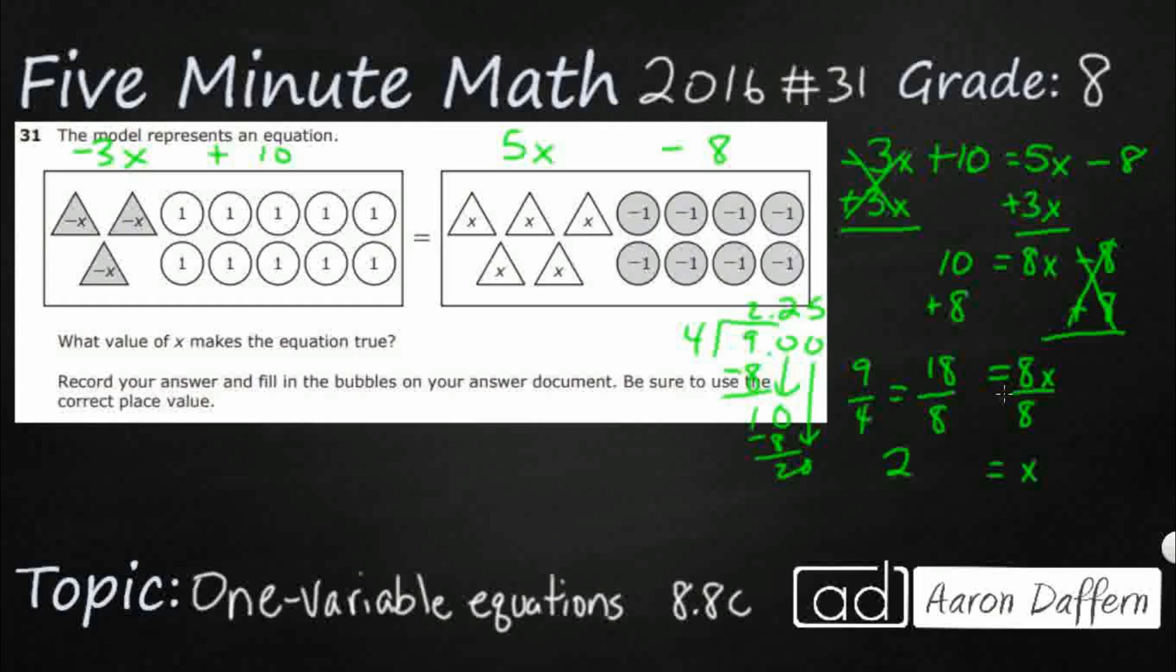So x is going to equal 2.25, and you know what we could do? I just want to verify that. So let's plug this back in here. So negative 3 times 2.25 - that's going to be negative 6.75 plus 10, and so that is going to be 3.25.